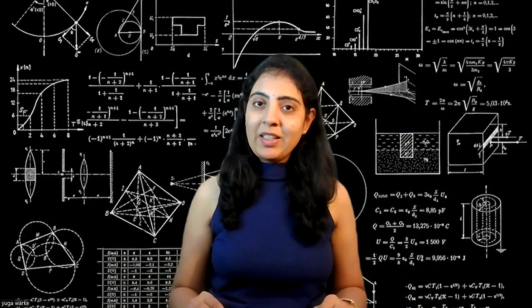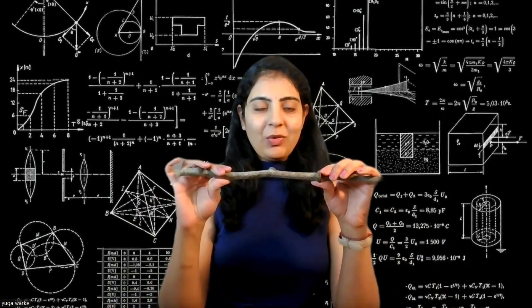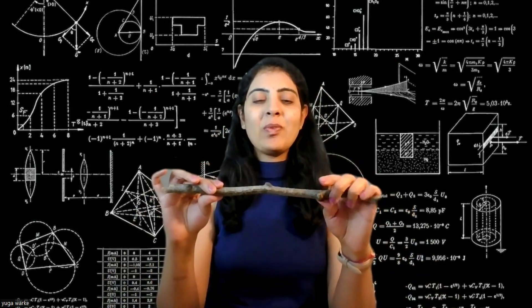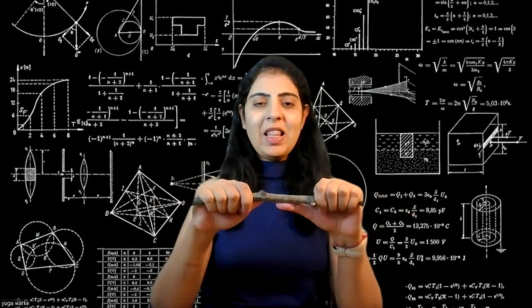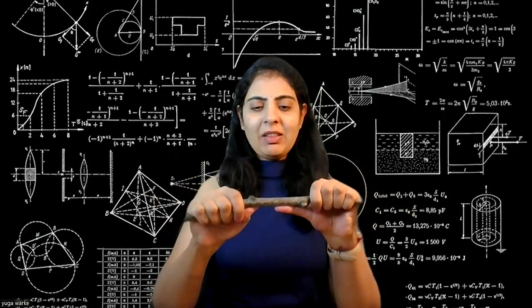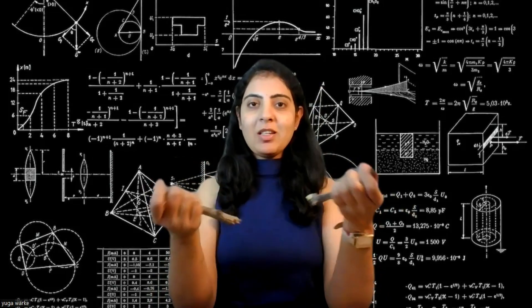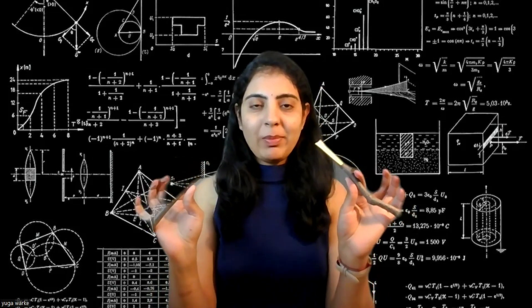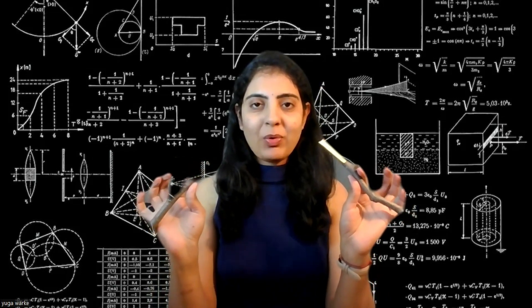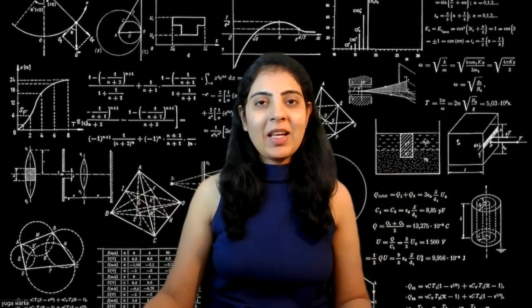What is a brittle material? We will see with this twig. This is a dried twig, so let's apply force on it. It is not able to take more load — it just broke into two pieces.